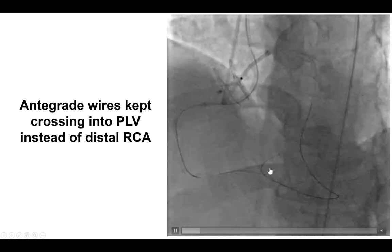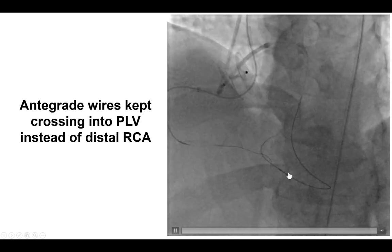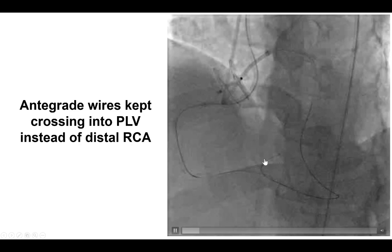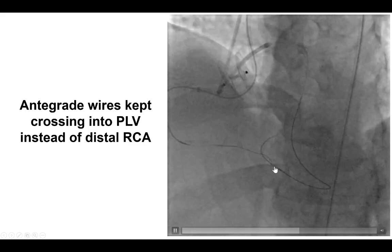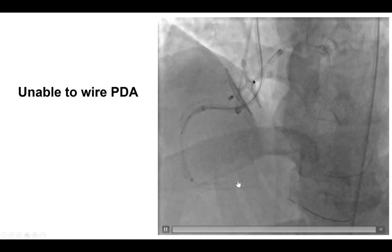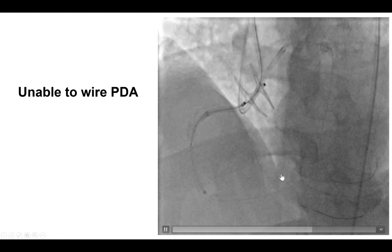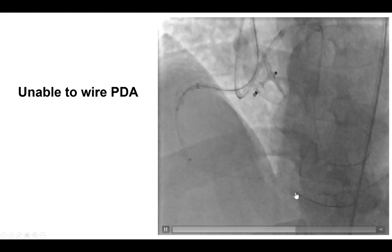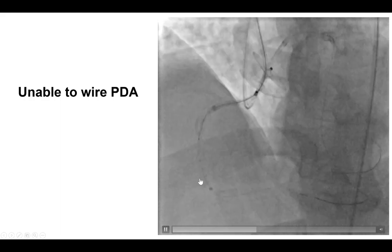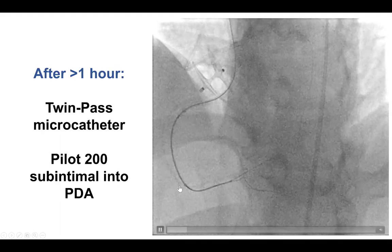Now that we had a sort of a marker wire into the PDA, we tried to do repeat antegrade wire escalation and it did appear at some point for the wire to go into the posterior descending artery. However, the wire eventually went into the right posterolateral branch and we had a very difficult time advancing the wire into the PDA, despite using a guide catheter extension for better support.